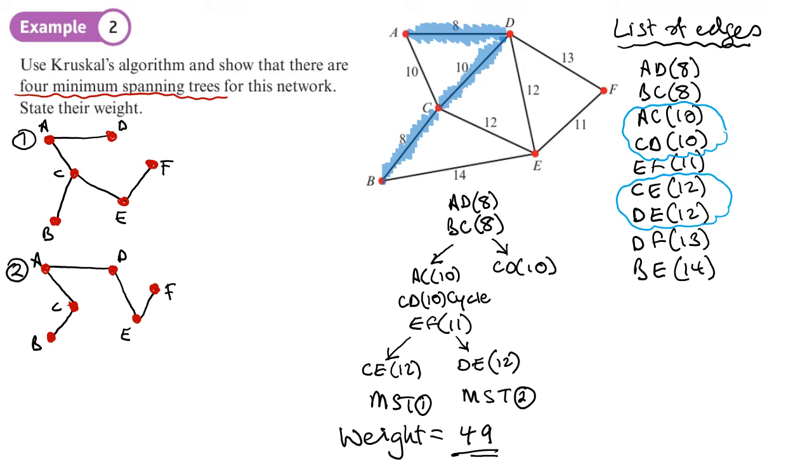Then our next choice is picking CD, which is 10. That's fine, it doesn't form a cycle. Next would be choosing AC. Now, we can't choose AC because that's going to form a cycle. So we'll just write down AC 10 cycle. That means that we skip that AC and then go on to EF, which is 11. That's fine, so we'll add that on there. So EF is our next one, which was 11.